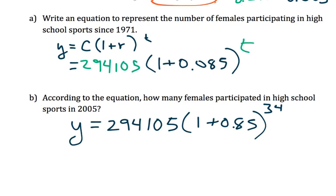Now that we do have all this, I'll type this into a calculator: 294,105, 1... In my calculator, I'm going to be lazy. I'm going to type 1.085 because I think I'd do that in fewer steps. And we get approximately 4,711,000...